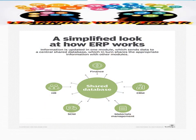This is a simplified look at how ERP works. Information is updated in one module, which sends data to a central shared database, which in turn shares the appropriate information with other modules. Data is entered in one place and then distributed according to the requirement of each department, function, or process. Employee access is limited to only what is required at their level, while the CEO or authorized personnel can see the whole picture.